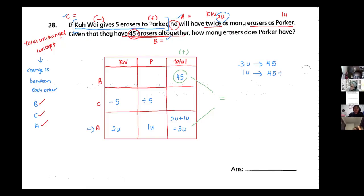So I know that this one unit here is 15. Since I want Paka, I just focus on Paka only. Look at Paka's column. Do not look at Kawai's column because I do not want to find his. So now I know that in the end he has 15.